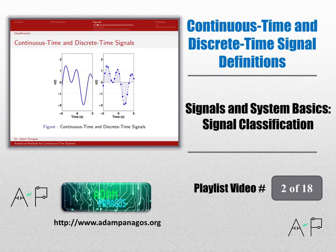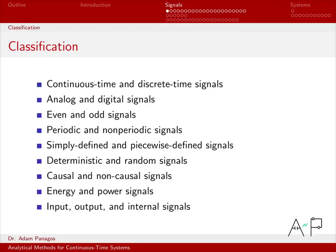In the previous video we defined what we meant by a signal and a system. Now we're going to start our journey working through this big list of words that we can apply to signals. In this first video we're going to consider just this first bullet - what does it mean to be a continuous-time signal, what does it mean to be a discrete-time signal. In the subsequent videos we'll work through all these other definitions and examples.